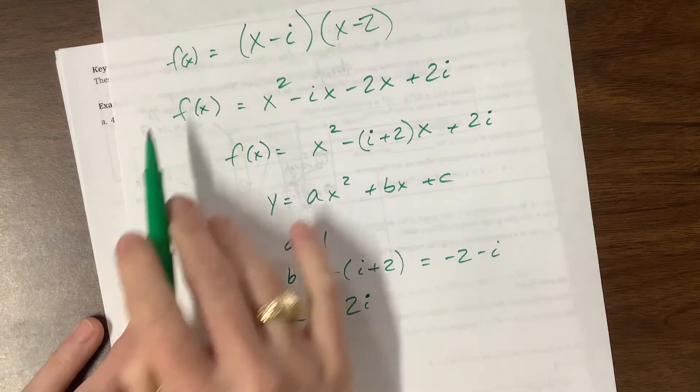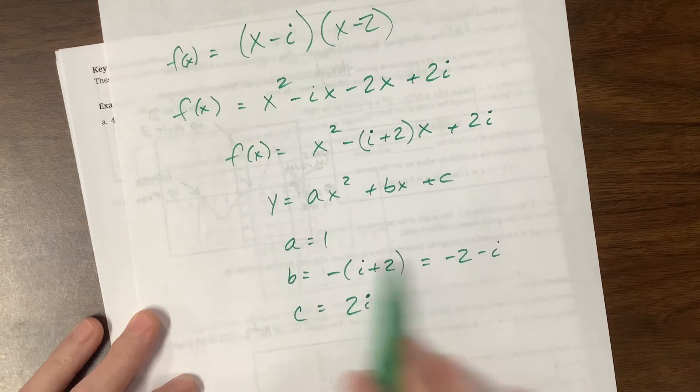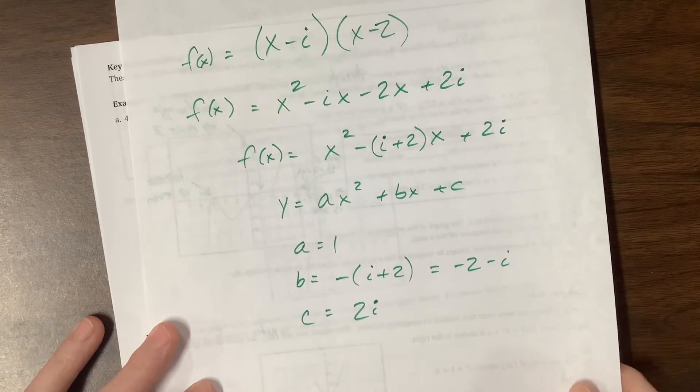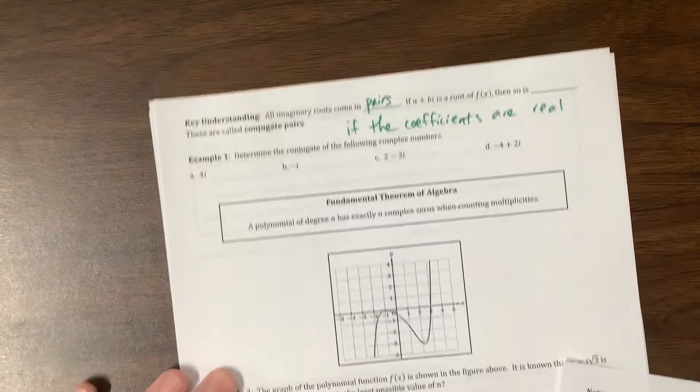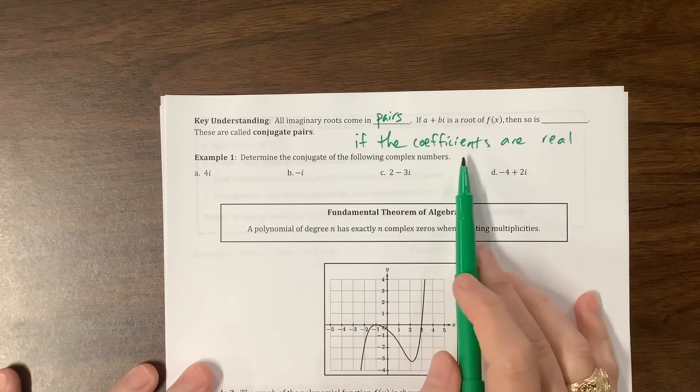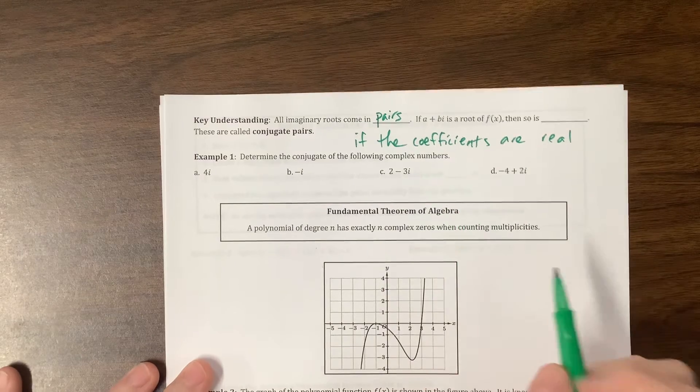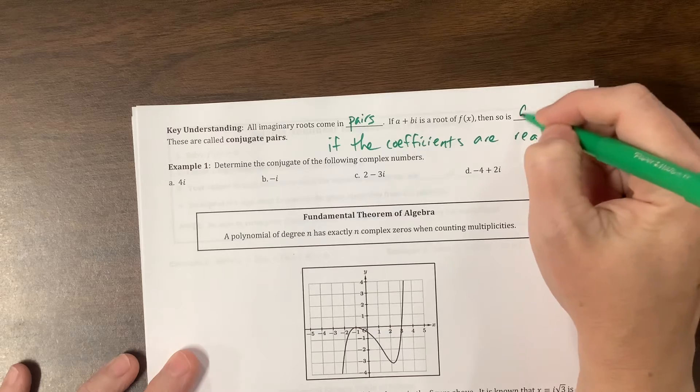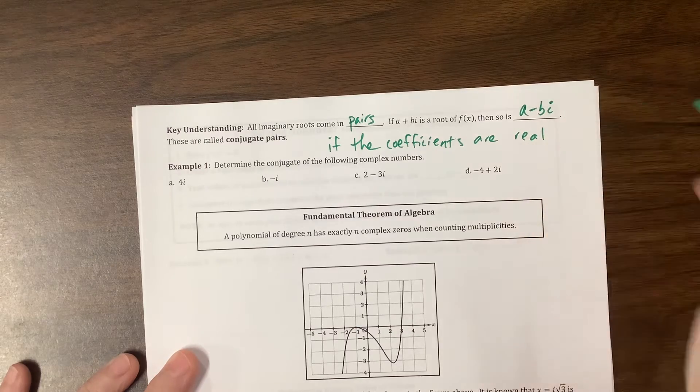And our c value would be equal to 2i. So my point is, you can have a polynomial that has non-real coefficients, but we don't see that very often. What they're saying with this problem is that they'll always travel in pairs, assuming that the coefficients are real.